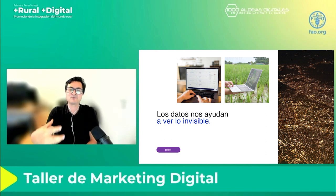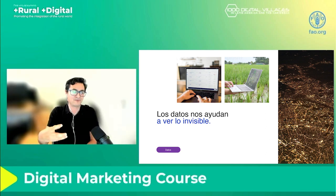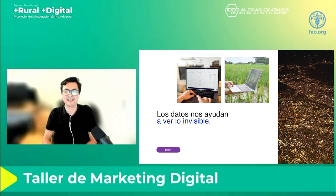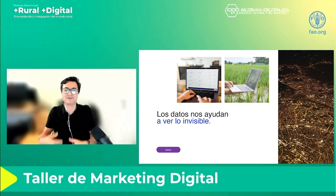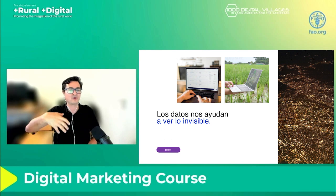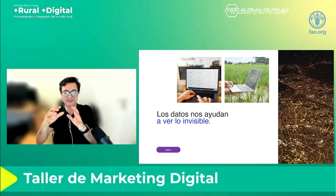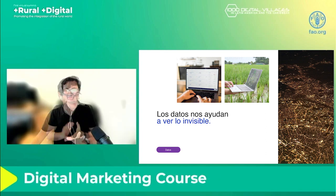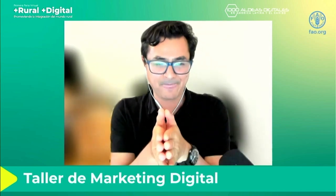We can also look at trends. If you look at what people search more frequently in Google — which is an important platform — you can see what people are looking for, and through that information you can say, for example, that people in a certain city are asking for biological products, so you can go into that market. Now let's look at some important elements of the value proposal.